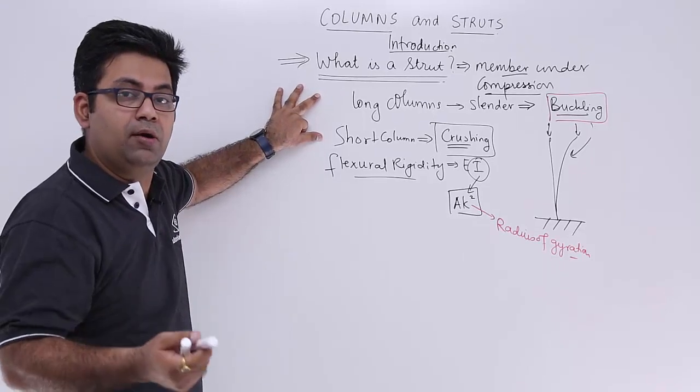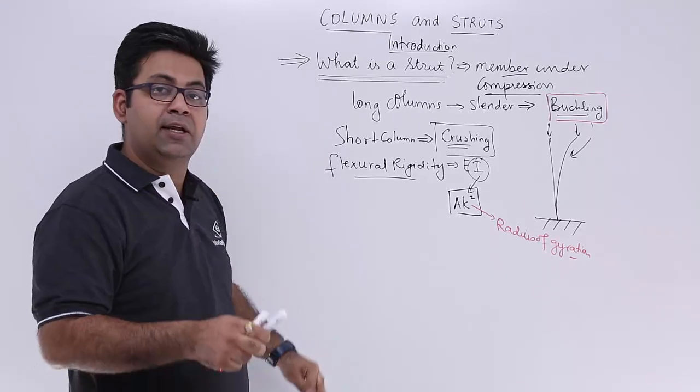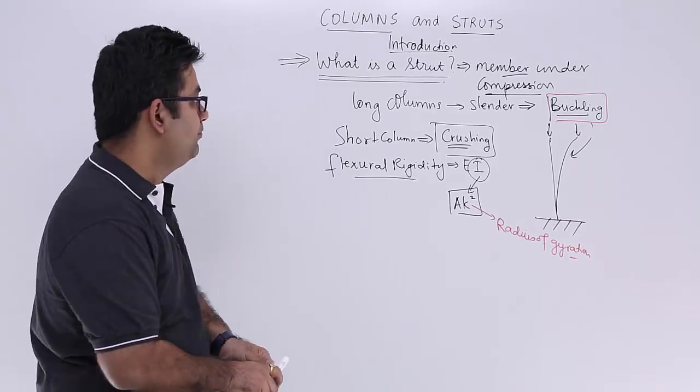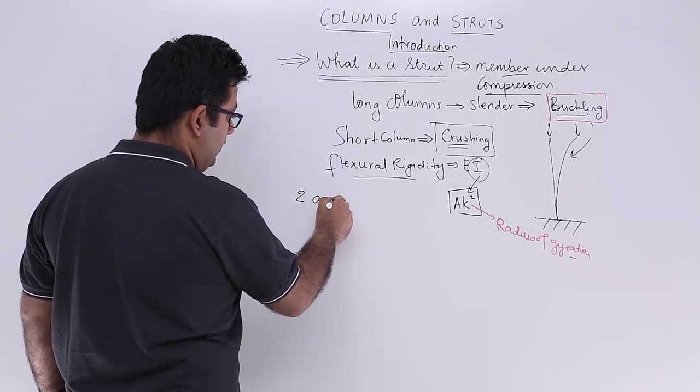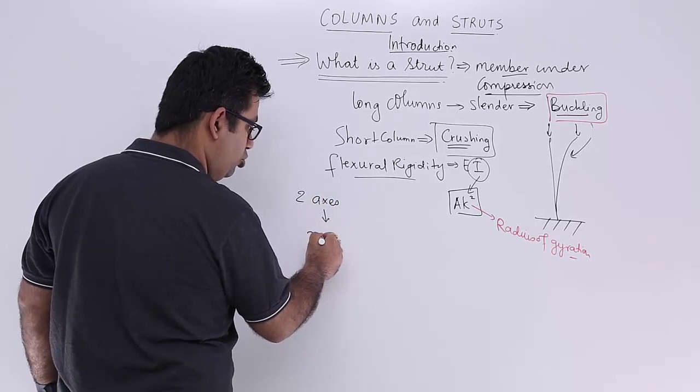For those two axes, you will have two moment of inertia. In order to define whether a column is a long column or a short column, we need to look at the two moment of inertia.